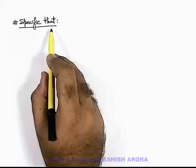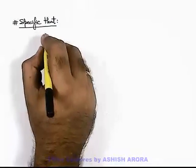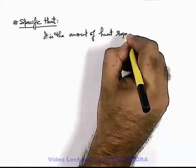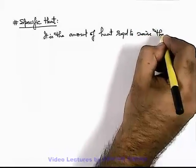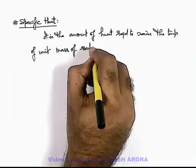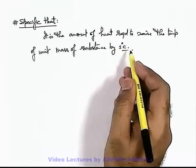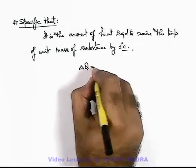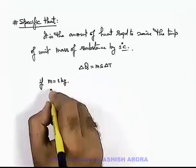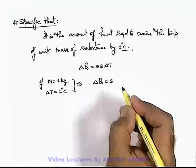Let's discuss about specific heat of a substance. About specific heat, you have already studied in your early classes. By definition, it is the amount of heat required to raise the temperature of unit mass of a substance by 1 degree centigrade. As we have just studied, the amount of heat required we can write as m·s·delta T. Here, if we use mass = 1 kilogram and the rise in temperature = 1 degree centigrade, then the value of heat supplied is equal to s, which is the specific heat.